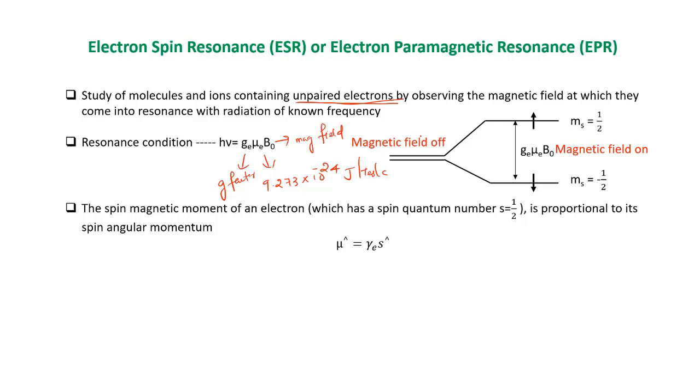Here in this picture, as you can see, when the magnetic field is off, the electron spin levels are degenerate, but when we apply the magnetic field, these spin levels split into two: ms=-1/2 and ms=+1/2. The energy difference between these two will be g·μE·B0. When this g·μE·B0 equals hν or the frequency, that will come into resonance.